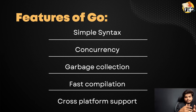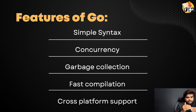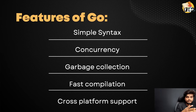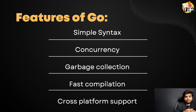In Go language, we have a combination of Python and C++. In Python, we have simple syntax, and in Go language we also have simple syntax. If we have code performance like C++, we can execute code with C++-like performance in Go language. So it can be a combination of both Python and C++.